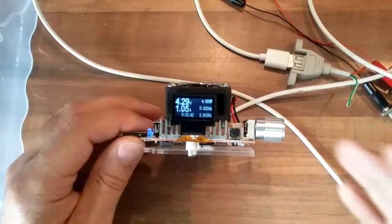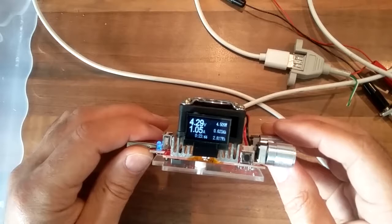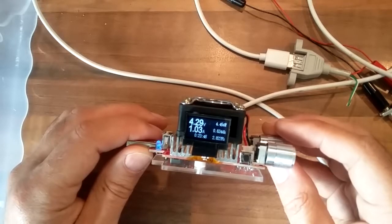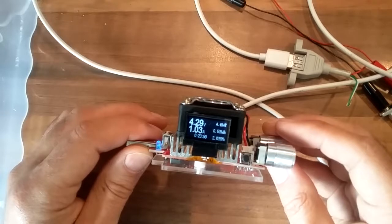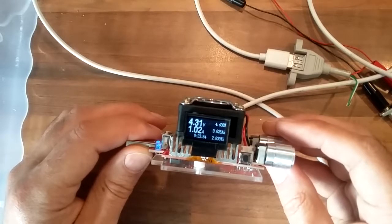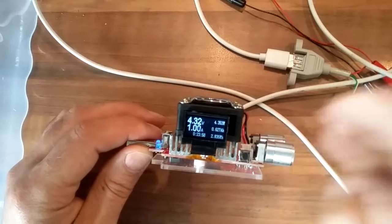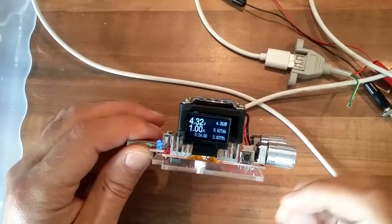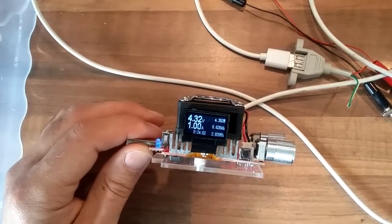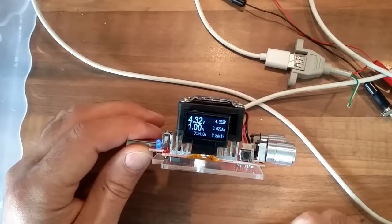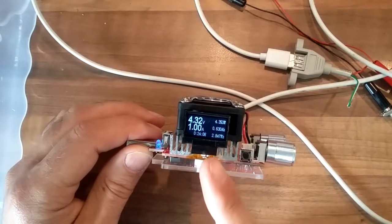Now if I set the dummy load to as close to one amp as it will let me—I'm choosing one amp because it's easy maths. Let's make it as simple as possible. At one amp we're getting 4.32 volts at this end of the cable.